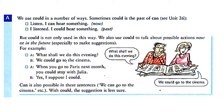For example: 'I can hear something now.' Yesterday, in the past: 'I could hear something.' But 'could' is not only used in this way. We also use 'could' to talk about possible actions now or in the future, especially to make suggestions. For example: 'What shall we do this evening?' — 'We could go to the cinema.' 'When you go to Paris next month, you could stay with Julia.' 'Can' is also possible in these sentences, but with 'could' the suggestion is less certain — there is doubt.